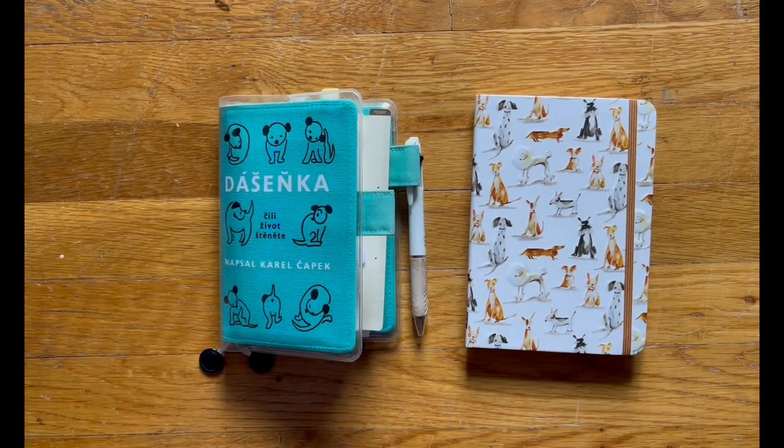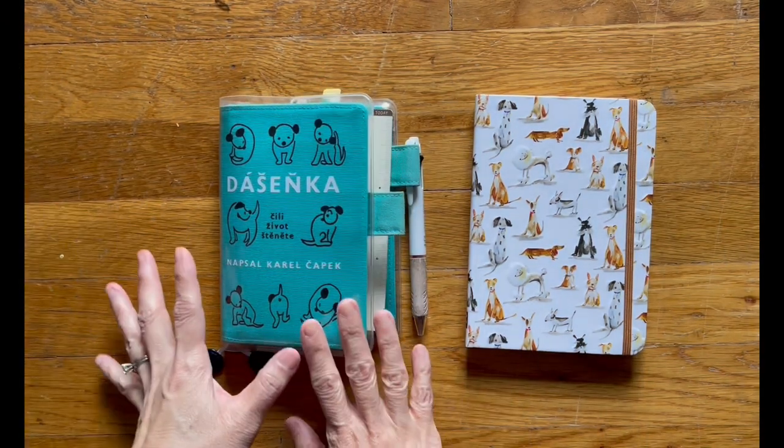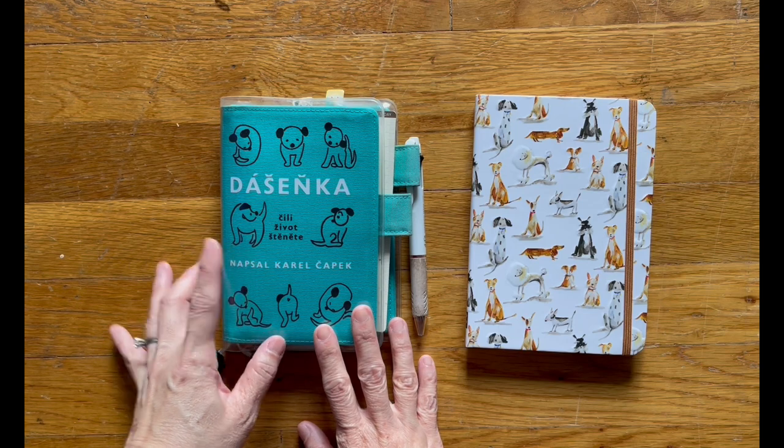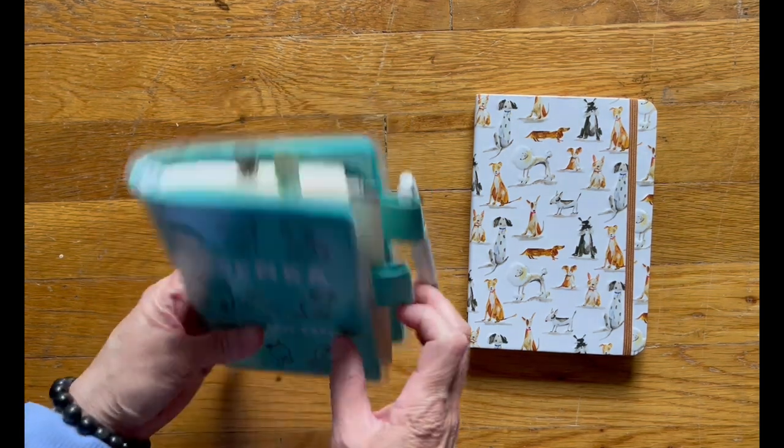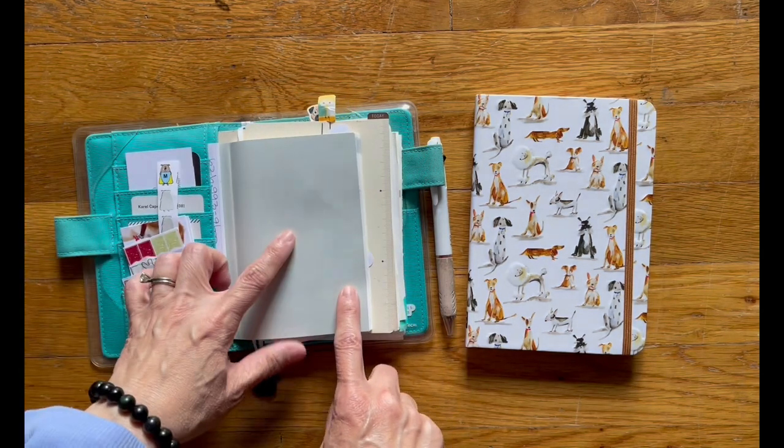So I thought I would summarize what I did. So over here is the Hobonichi A6 cover. Bruce's meal poop water tracker. I use the A6 weekly supplement in here.